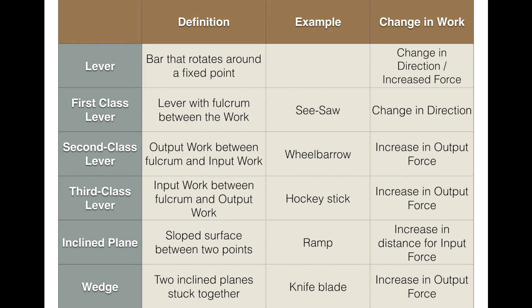So that's your lesson. We talked about three types of simple machines and mechanical advantage — how many times more the output force is multiplied compared to the input force. We talked about levers: bars rotating around a fixed point, with different classes depending on where the fulcrum, input, and output are placed — seesaws, wheelbarrows, and hockey sticks are examples. An incline plane is a sloped surface between two points used to lift something, like a ramp. A wedge is two incline planes stuck together. If you have any questions, please let me know — thanks for watching.